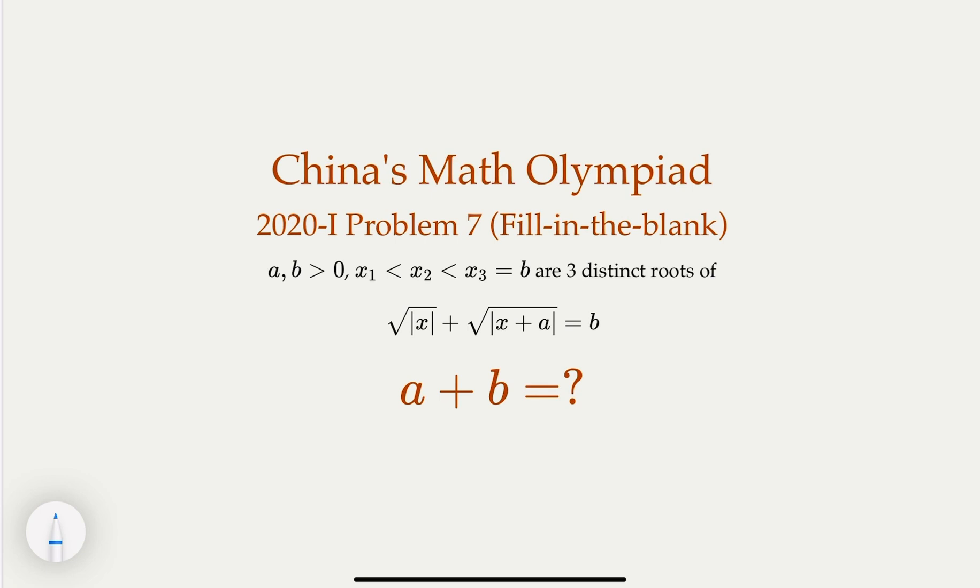We are given that a, b are constants, positive, the three distinct roots here, notice that, and the biggest root actually happens to be b. Here we try to find a plus b.